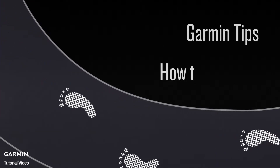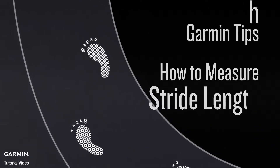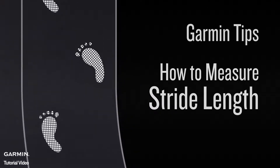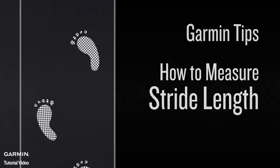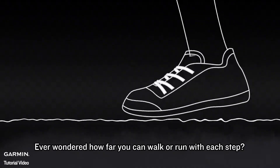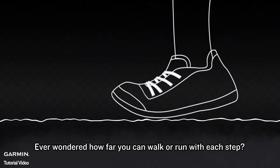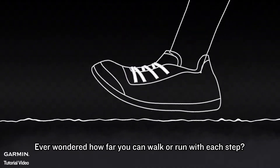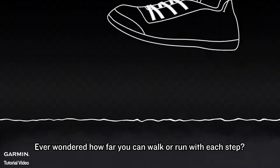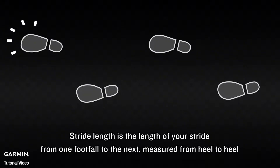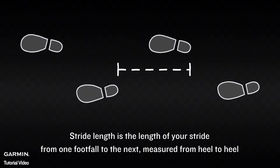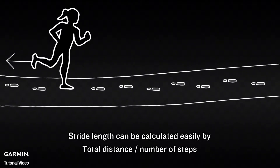Garmin tips: how to measure stride length. You ever wondered how far you can walk or run with each step? Stride length is the length of your stride from one footfall to the next — measure it from heel to heel.